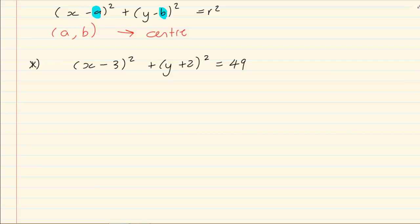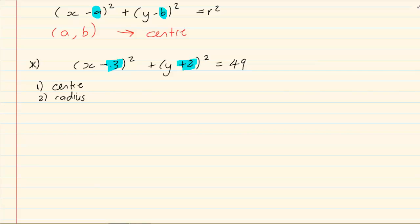If I give you the equation (x minus 3) all squared plus (y plus 2) all squared equals 49 — give me the center and the radius. The center is linked to the brackets, but be careful: the sign from the original changes when we talk about the center. So if I have minus 3, the center is 3. If I have plus 2, the center is minus 2. So the center is (3, minus 2).